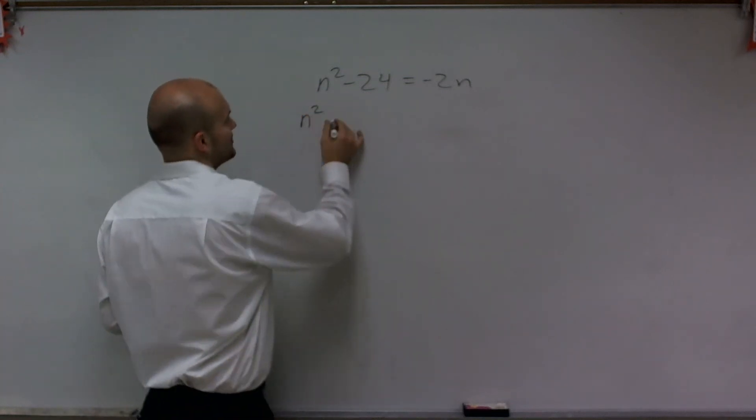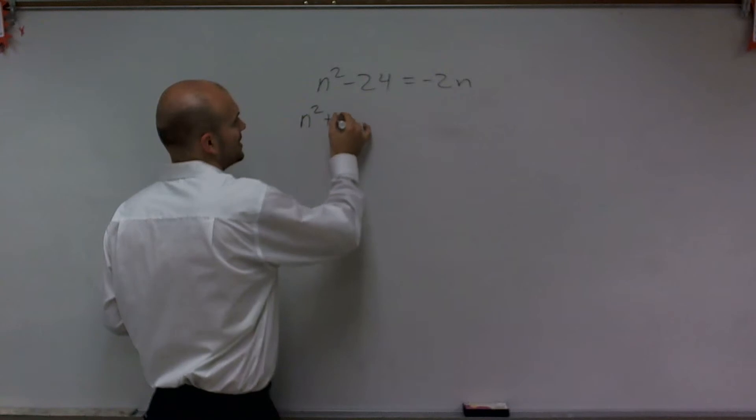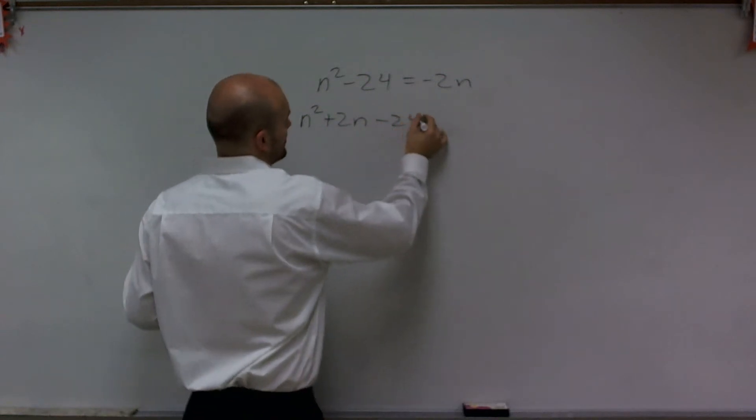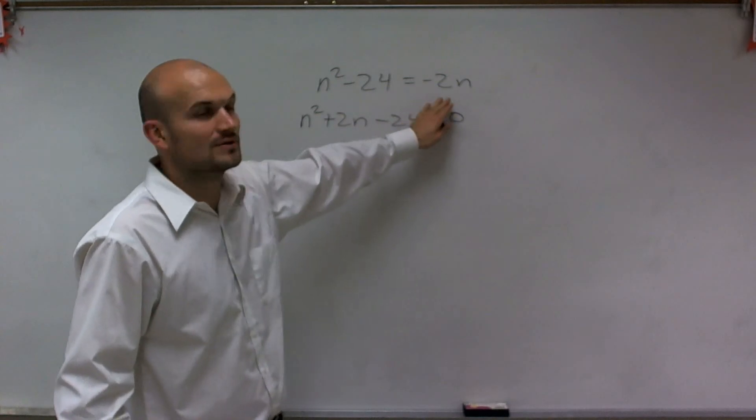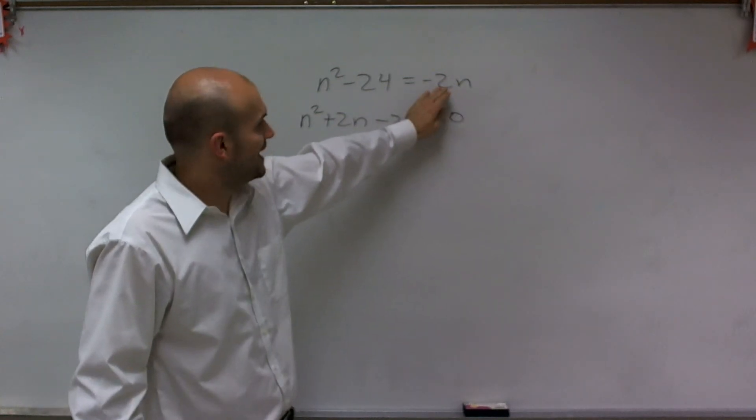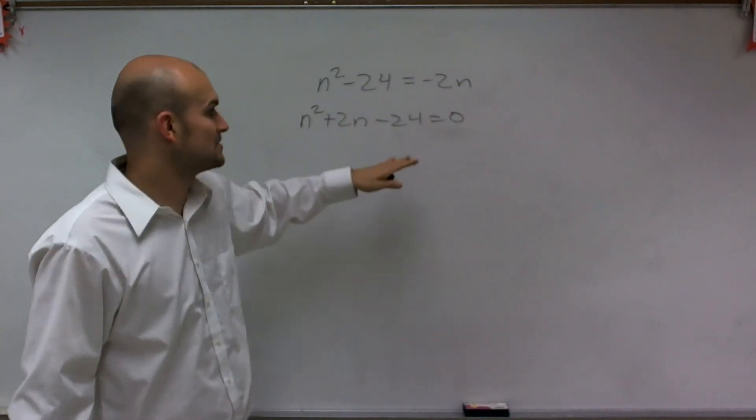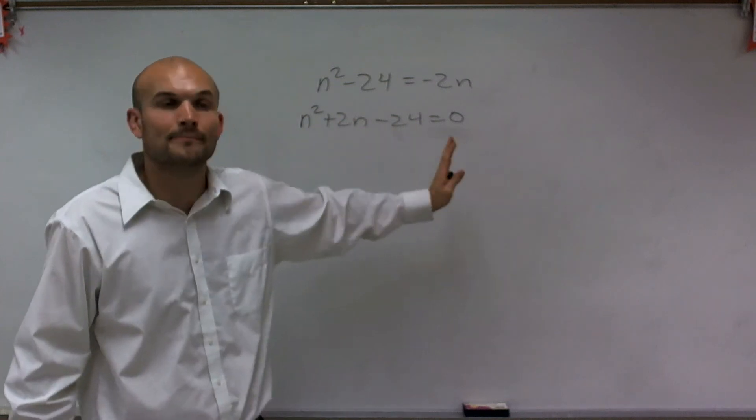Quadratic form is going to be n² + 2n - 24 = 0. So how did I do that? To get this to equal 0, I added the 2n to the other side. So now I have it in quadratic form.